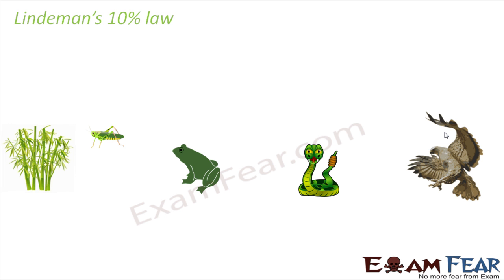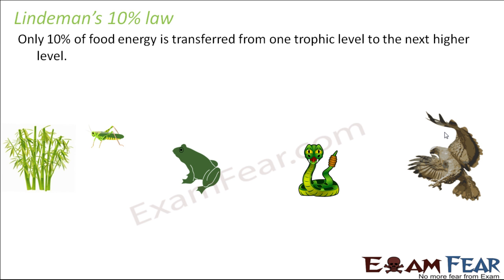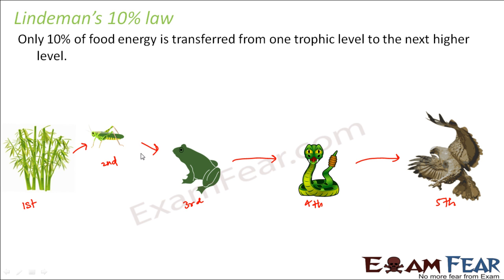Based on all this, Lindemann's 10% law was proposed. The law is named the '10% law' because at each trophic level only 10% of energy gets transferred from the previous trophic level. As per this law, only 10% of food energy is transferred from one trophic level to the next higher trophic level — whether it is the first, second, third, fourth, or fifth trophic level.